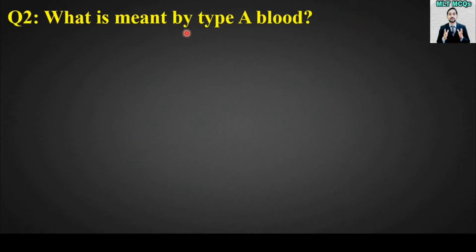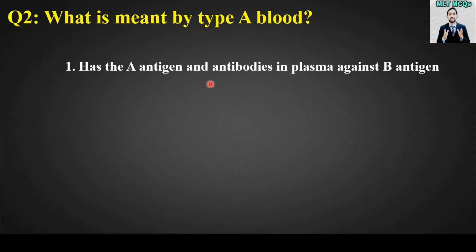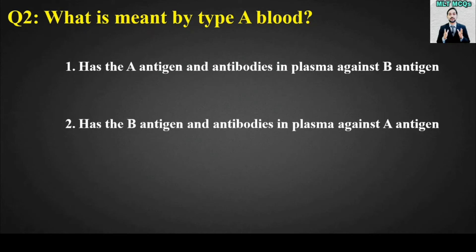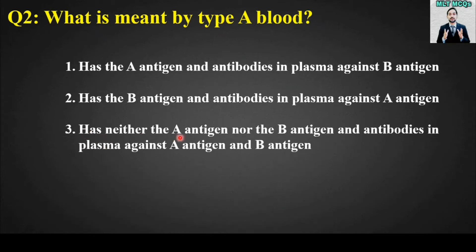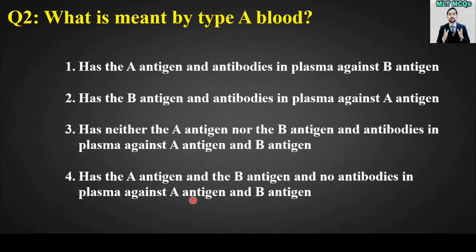MCQ number two: What is meant by type A blood? Options: has the A antigen and antibodies in plasma against B antigen; has the B antigen and antibodies in plasma against A antigen; has neither the A antigen nor the B antigen and antibodies in plasma against A and B antigen; has the A antigen and the B antigen and no antibodies in plasma. The right answer is option number one — type A blood has the A antigen and antibodies in plasma against B antigen.